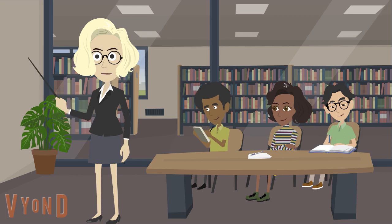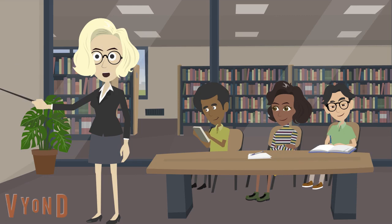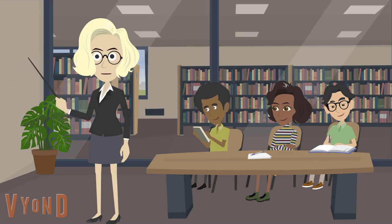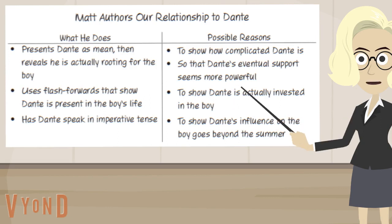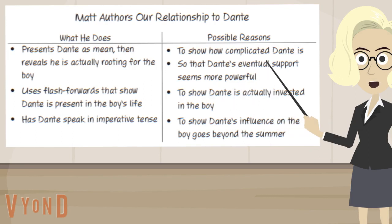Readers, even if we don't notice the tenses, even if we don't know what they're called — which really doesn't matter — they have an effect on us. Once again, I'm going to jot this thinking in our notes. I added to what Matt does: that he has Dante speak in imperative tense. The possible reasons for this are to show Dante's influence on the boy, that it goes beyond the summer.